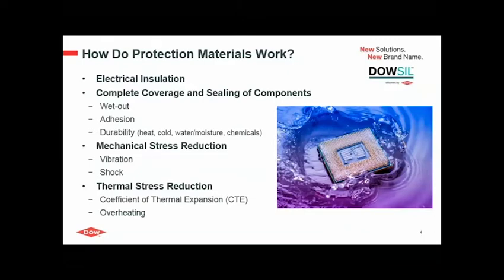So what kind of properties do materials need to work as protection materials? First, they need to be good electrical insulators. They also need to completely cover and seal all of the components on your board, requiring good wet-out capability. Depending on the level of protection required, they also need to provide a certain level of adhesion. All this needs to be durable to resist heat, cold, water, or chemical exposure. In addition, those materials need to work as stress reducers against mechanical stresses like vibration and shock, or thermal stresses like CTE mismatch or overheating. CTE stands for coefficient of thermal expansion — it indicates the dimensional change of a material when temperature changes.